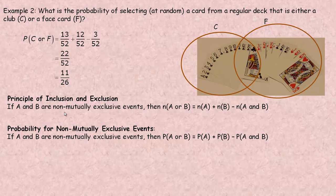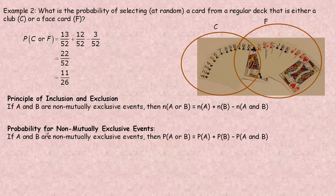This is called the principle of inclusion and exclusion. If A and B are non-mutually exclusive events — meaning they have something in common — then the number in A or B equals the number in A plus the number in B, minus the number in both A and B, to avoid double-counting. Similarly for probabilities: the probability of A or B equals the probability of A plus the probability of B minus the probability of A and B.